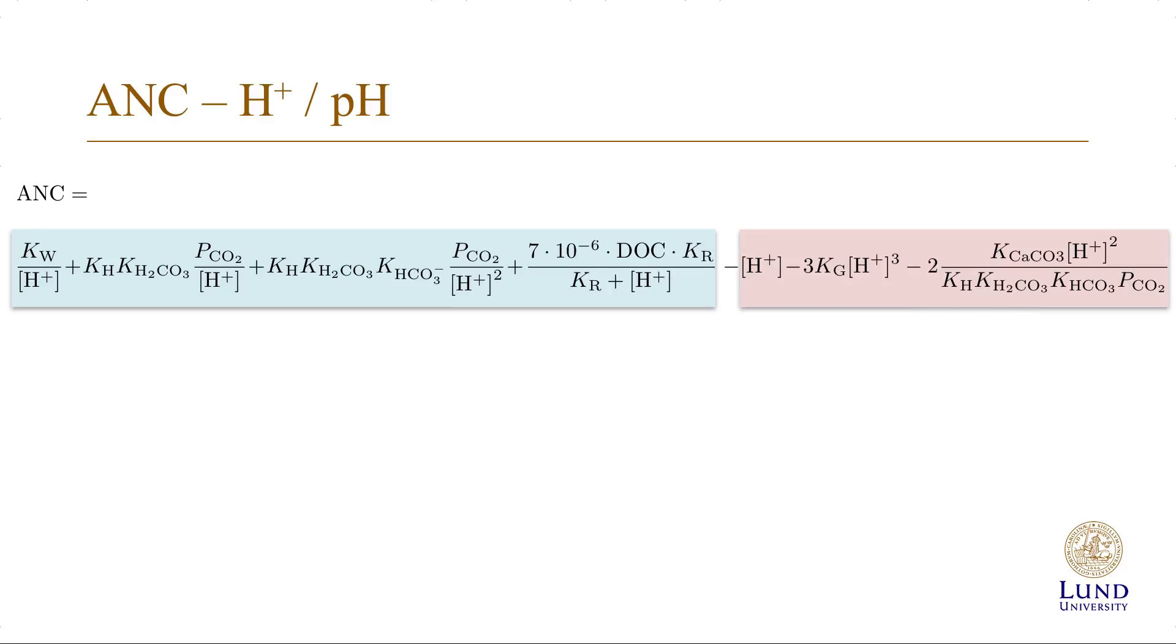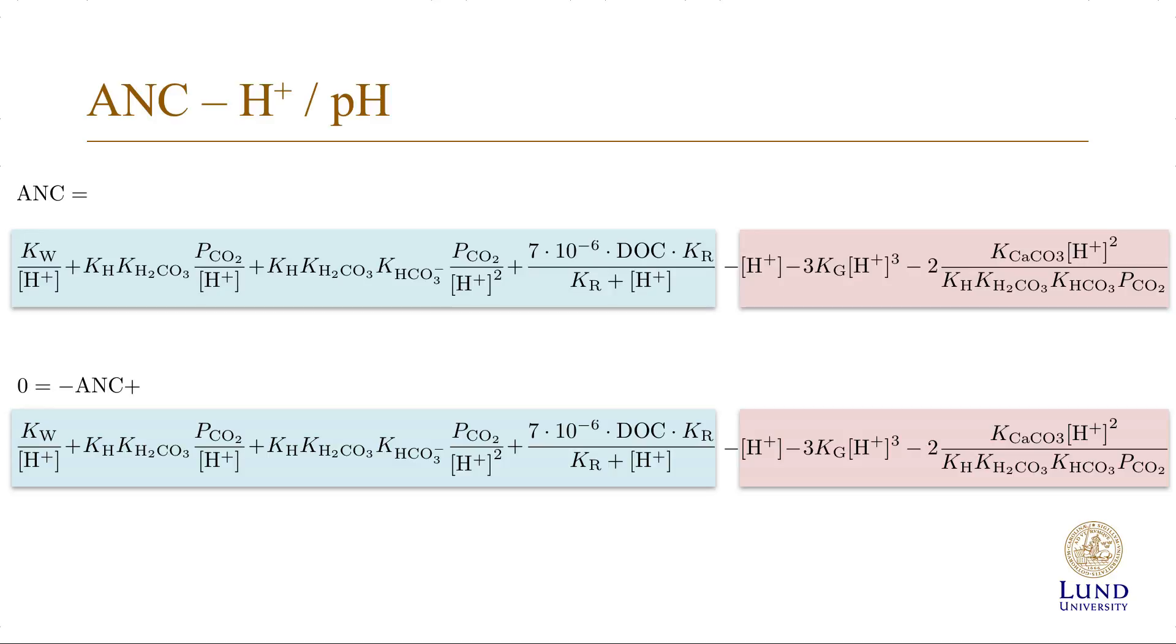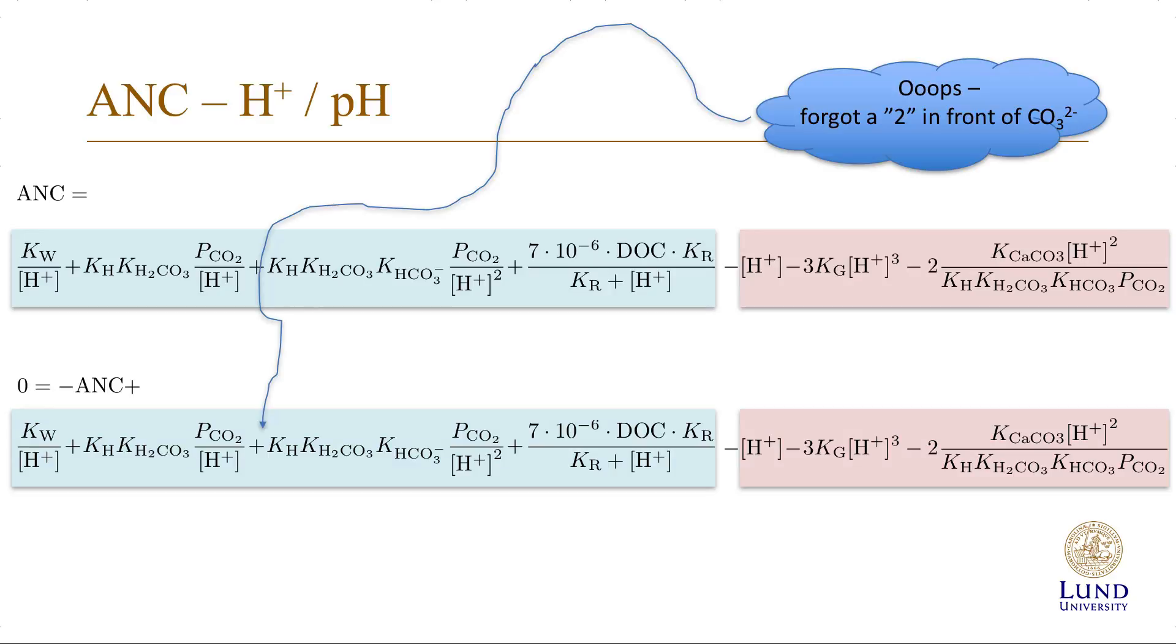In terms of numerical calculations, what we actually have to find is the root to the equation 0 equals minus ANC plus the various terms that come from the charge balance. And it appears as I forgot a 2 in front of the carbonate concentrations in both equations.